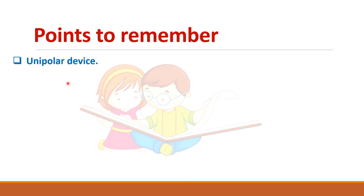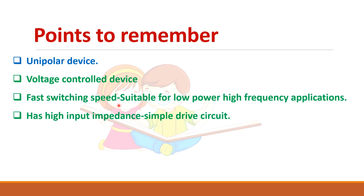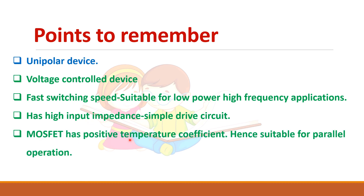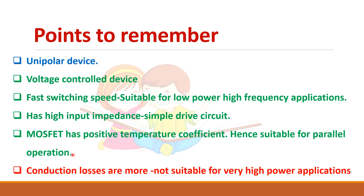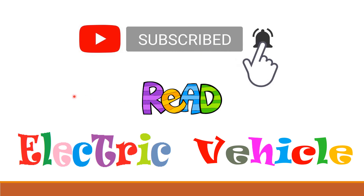Points to remember: MOSFET is a unipolar device and a voltage control device. It can be used for high frequency operation. It has high input impedance and a positive temperature coefficient, so they are suitable for parallel operation. The drawback is that its on-state resistance is very high, so it is not suitable for very high power applications. If you like the video, do subscribe to our channel. Thank you.